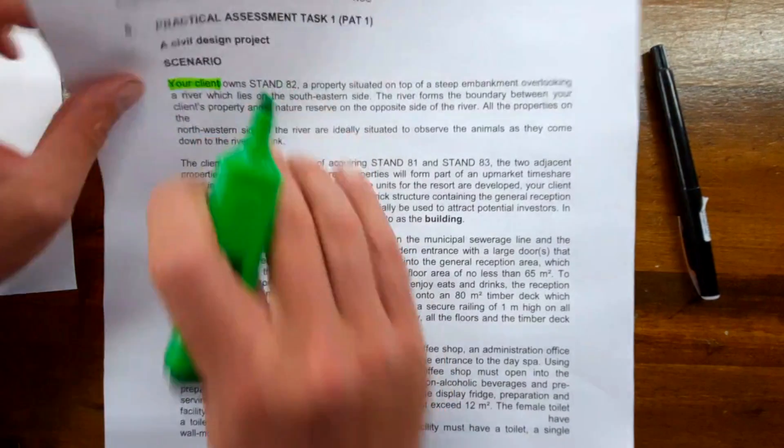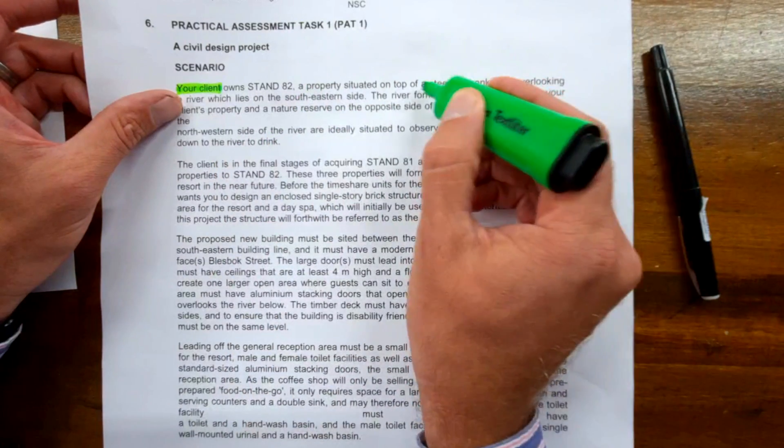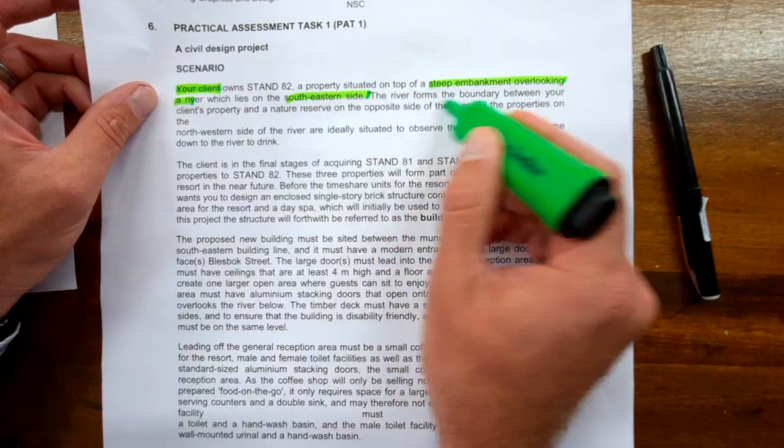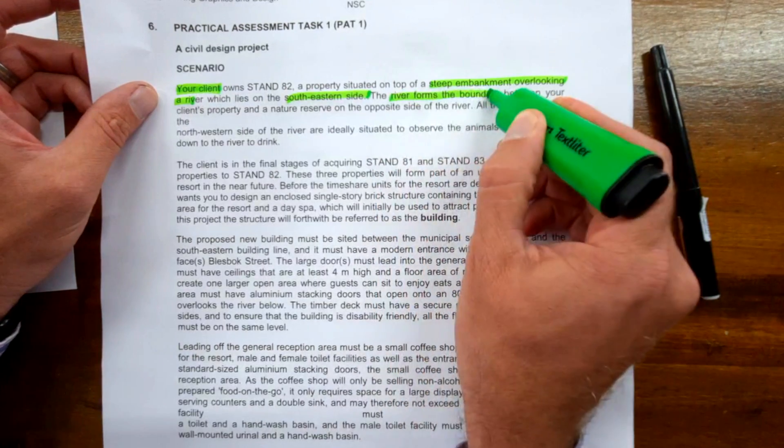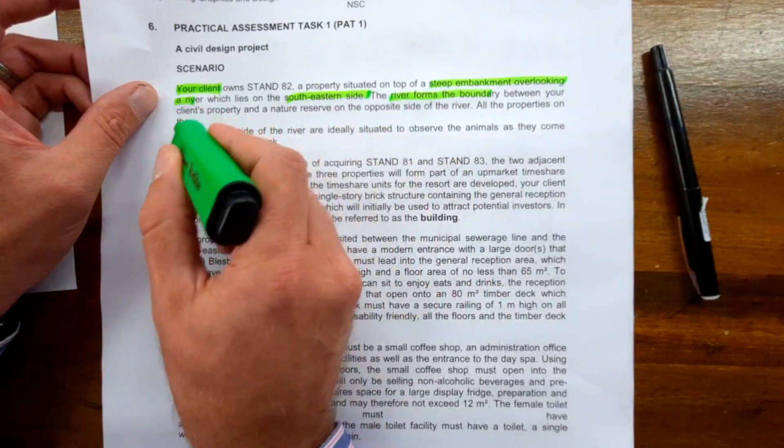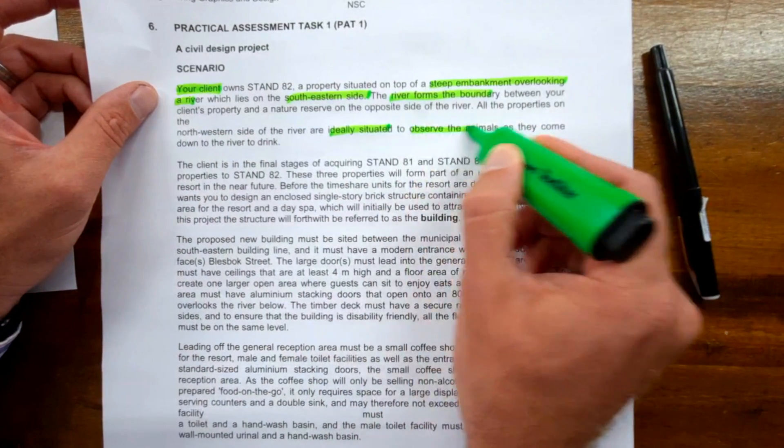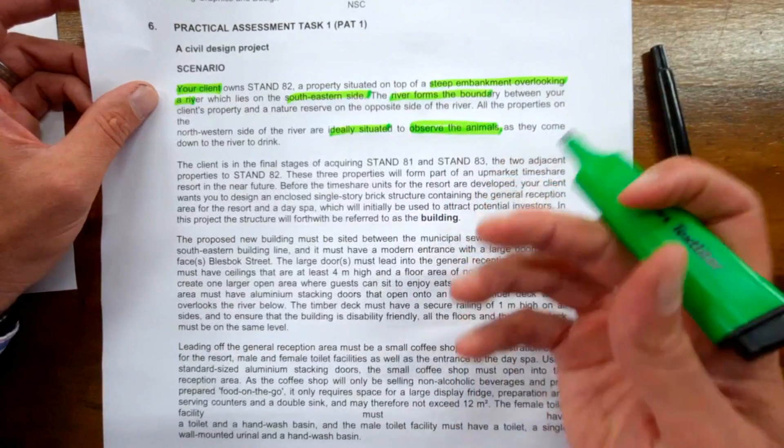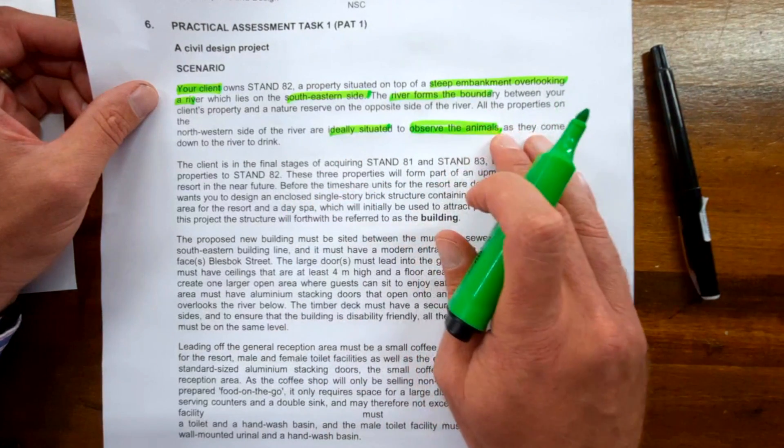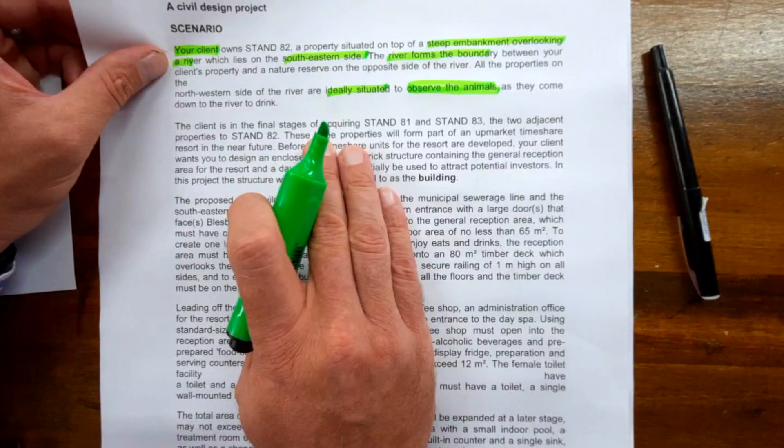In other words, you are representing an architectural firm or design company, and your client owns Stand 82, visible on the second page. This property is situated on top of a steep embankment overlooking a river on the southeastern side. The river forms the boundary between your client's property and a nature reserve, and all properties on the northwestern side are ideally situated to observe the animals.